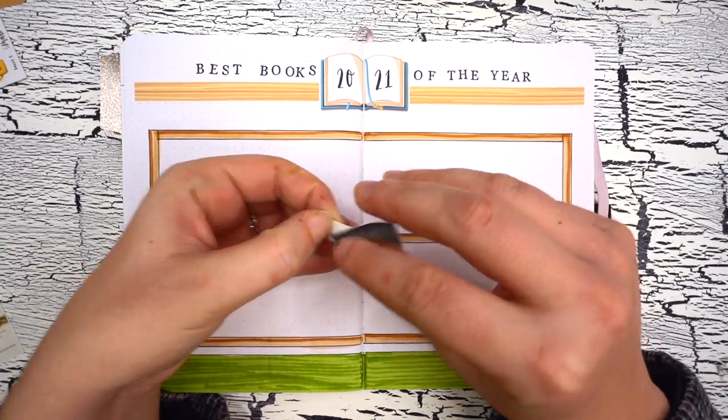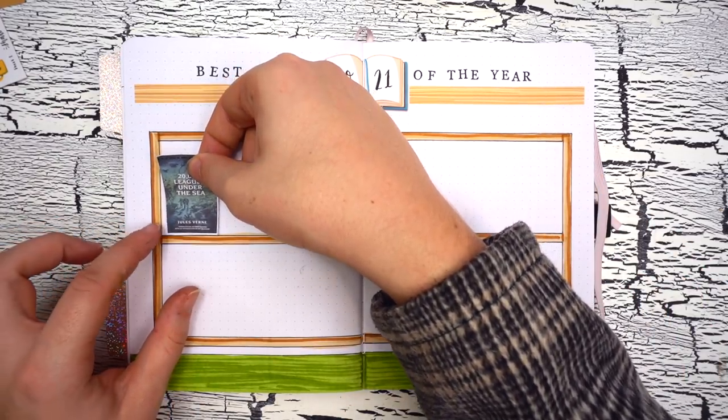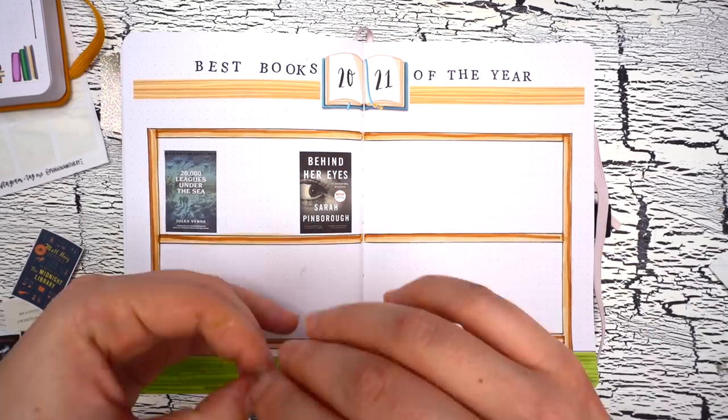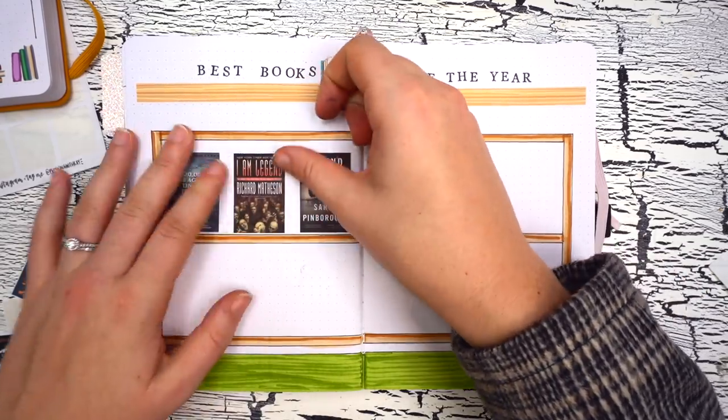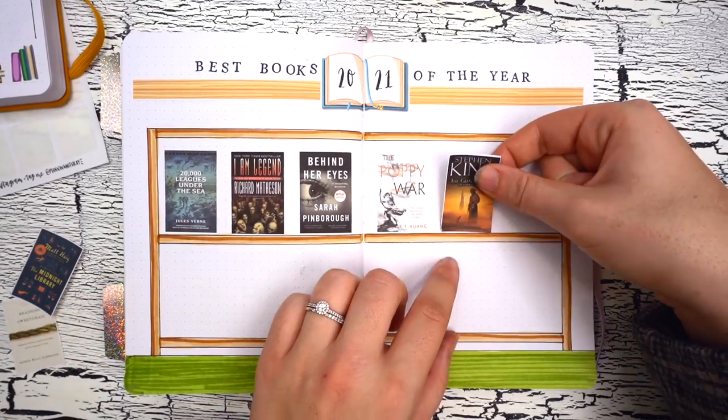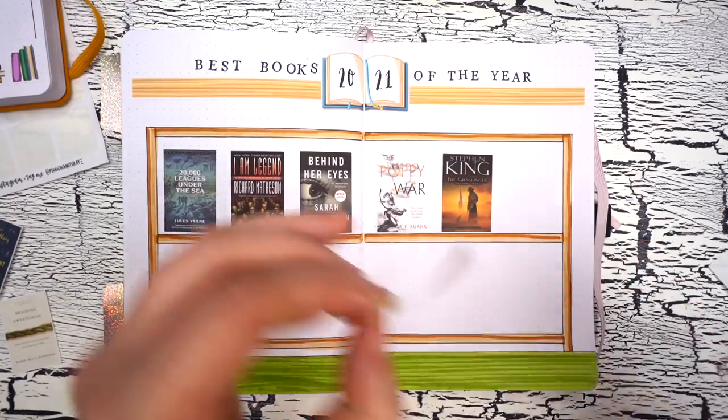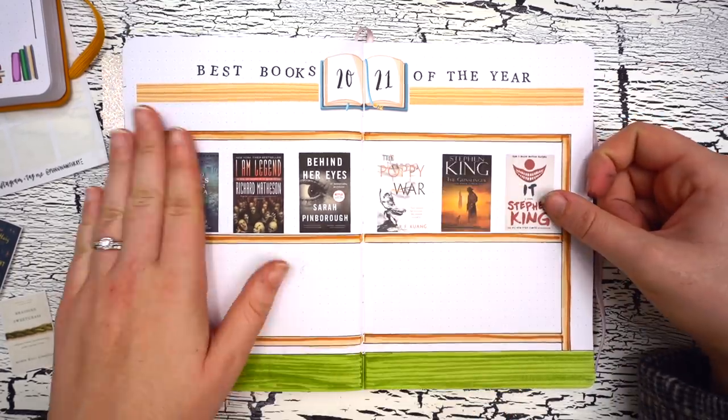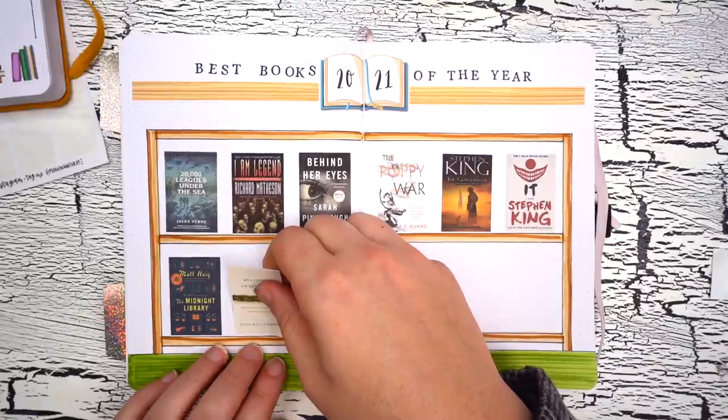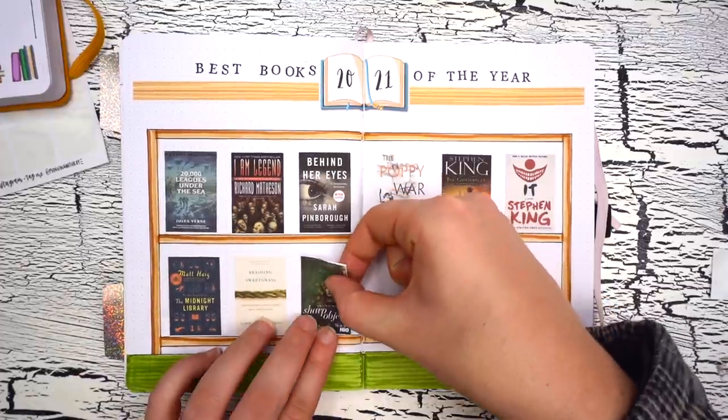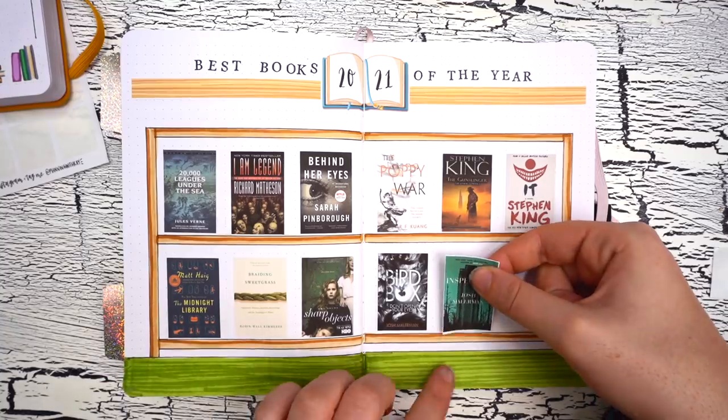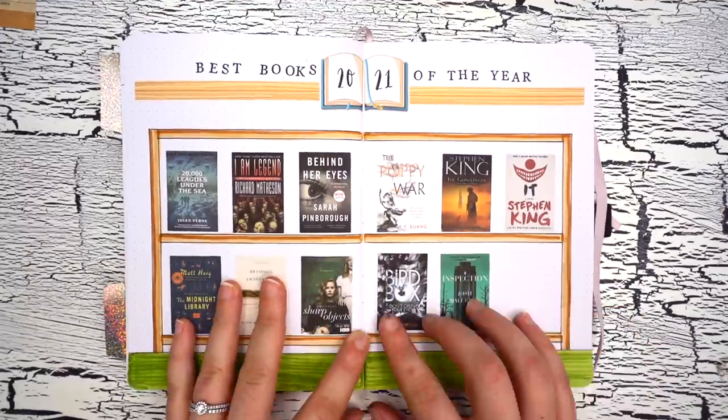So without further ado, here are my favorite books of 2021, so far at least since there's technically one more month left in the year. We got 20,000 Leagues Under the Sea by Jules Verne, I Am Legend by Richard Matheson, Behind Her Eyes by Sarah Pinborough, The Poppy War by R.F. Kuang, The Dark Tower series starting with The Gunslinger by Stephen King, It also by Stephen King, The Midnight Library by Matt Haig, Braiding Sweetgrass by Robin Wall Kimmerer, Sharp Objects by Gillian Flynn, Bird Box as well as the sequel Malorie by Josh Malerman, and finally Inspection also by Josh Malerman. I could seriously talk for hours about these books, I love them so much, but I'm not going to get into it here otherwise this video would end up being way too long. So I'll just say that the start of my reading journey has been so incredible, I'm clearly a sucker for horror, thriller, and post-apocalyptic novels, and I'm so excited to see what books next year has in store for me.